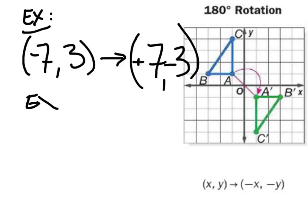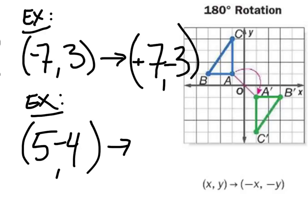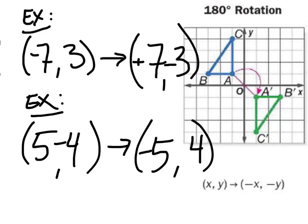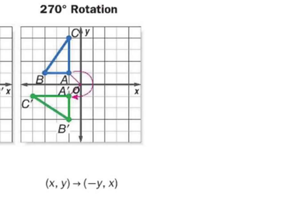Let's look at another example: the point (5, -4). For a 180-degree rotation about the origin, we're going to have the same numbers but the signs are going to change. So where the 4 was negative, it's positive now. Where the 5 was positive, now it is negative. So the result is (-5, 4).